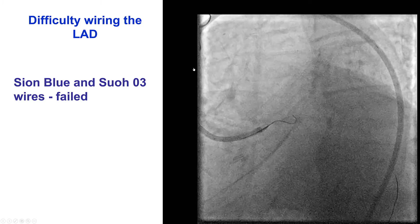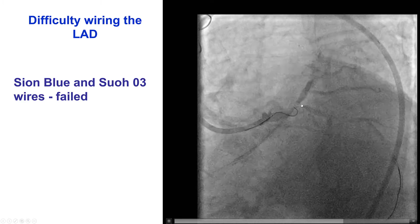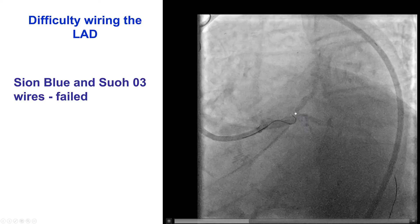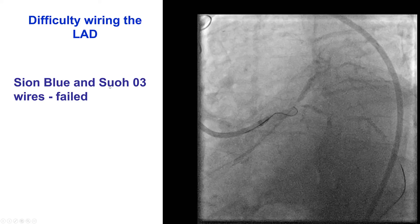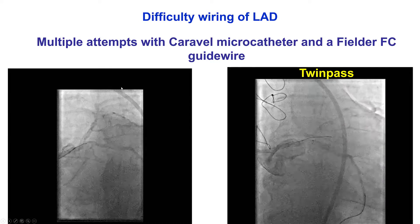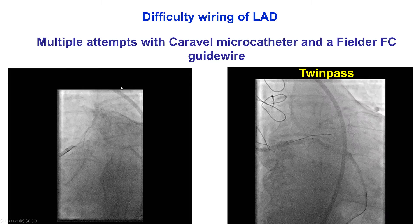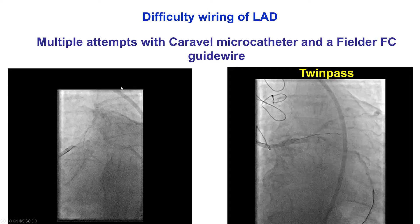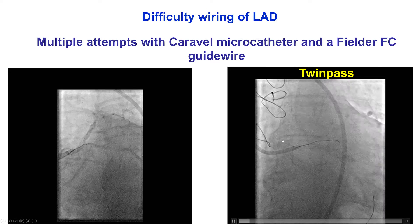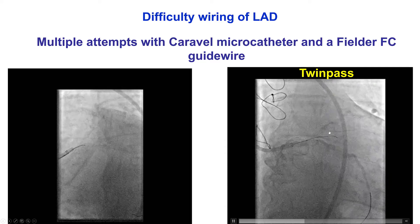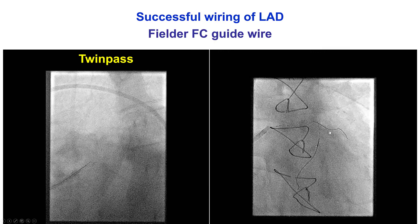We then had a lot of difficulty advancing a guide wire into the LAD, in part because of the angulation and in part because of the significant ostial LAD lesion. We used a C-on blue and a Suoh 3 wire, but both failed to cross into the LAD. We then did multiple attempts using a Caraval microcatheter and a Fielder FC guide wire that were also unsuccessful. We also used a TwinPass dual lumen microcatheter in an attempt to wire the LAD, once again without success.